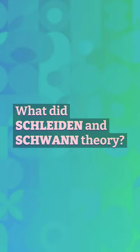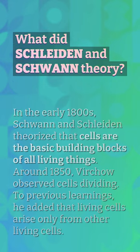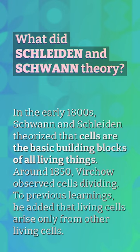What did Schleiden and Schwann theorize? In the early 1800s, Schwann and Schleiden theorized that cells are the basic building blocks of all living things. Around 1850, Virchow observed cells dividing. To previous learnings, he added that living cells arise only from other living cells.